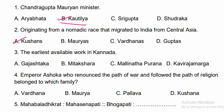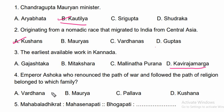The earliest available work in Kannada is the Kavirajamarga — that is the first work in Kannada. Emperor Ashoka, who renounced the path of war and followed the path of religion, belonged to the Mauryan family. Option B is the correct answer.